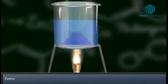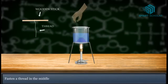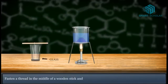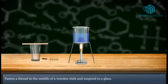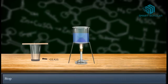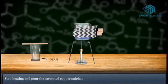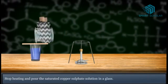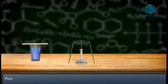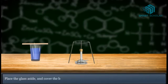Fasten a thread in the middle of a wooden stick and suspend in a glass. Stop heating and pour the saturated copper sulphate solution in a glass. Place the glass aside and cover the beaker with cardboard.